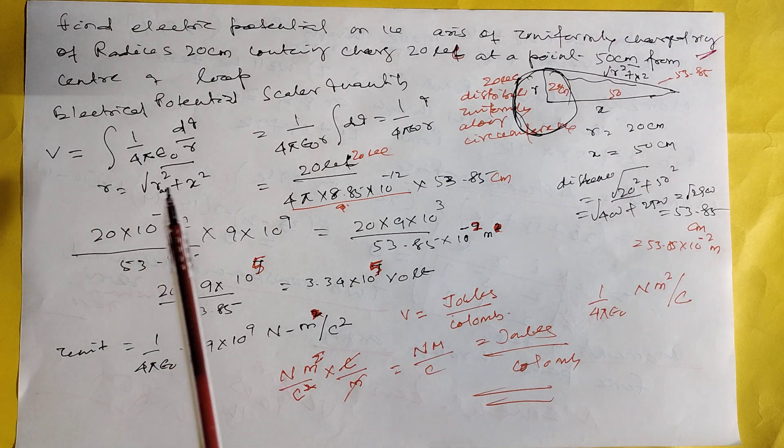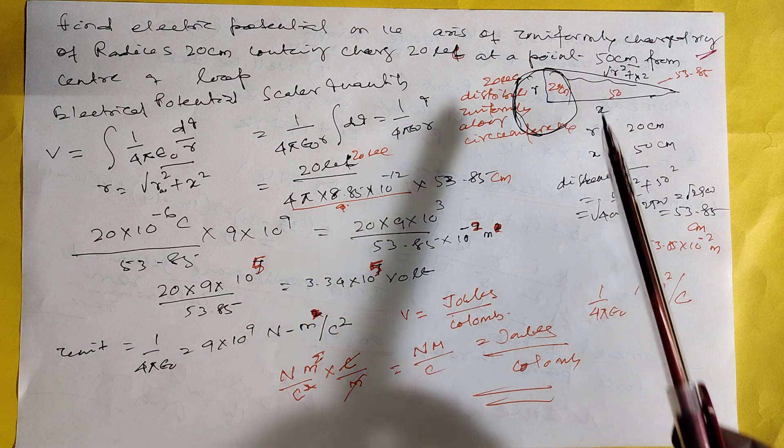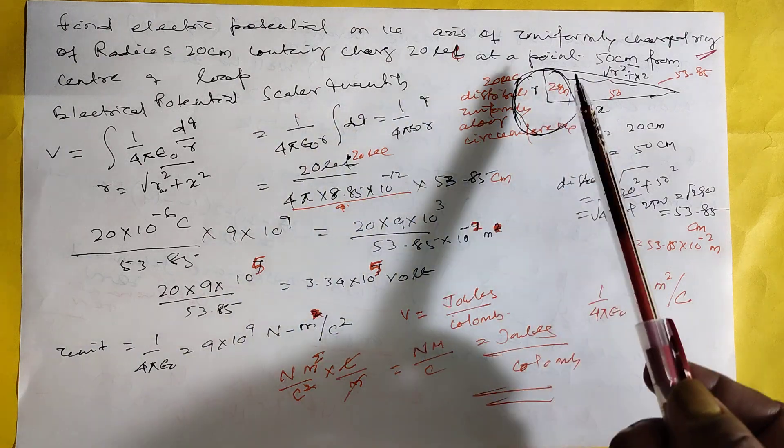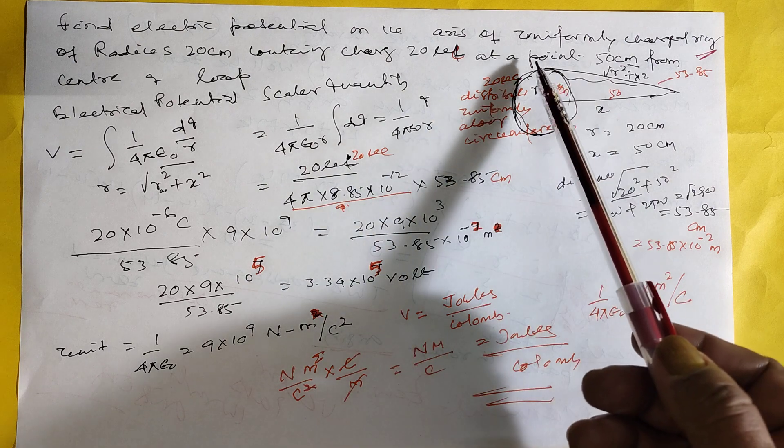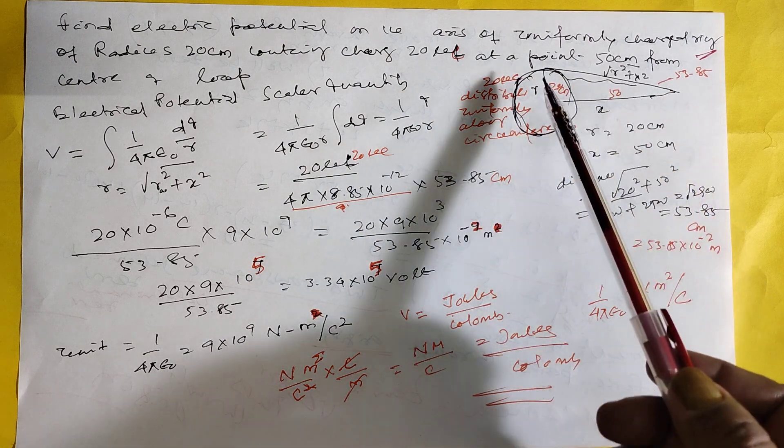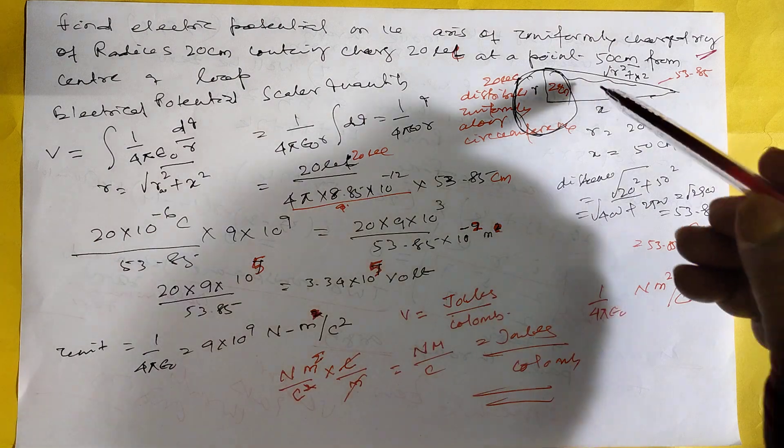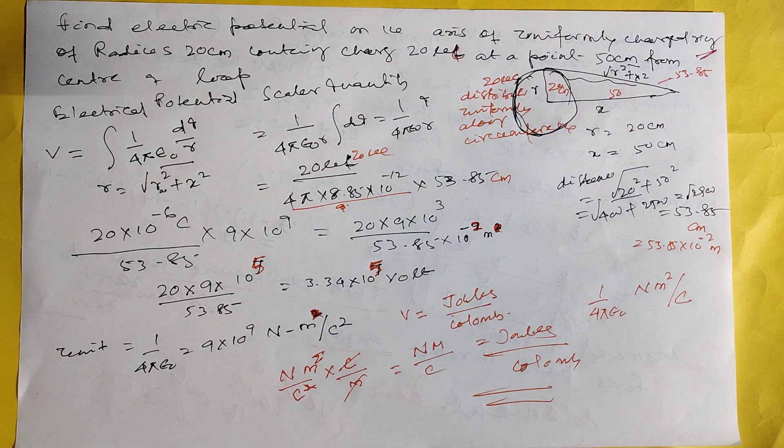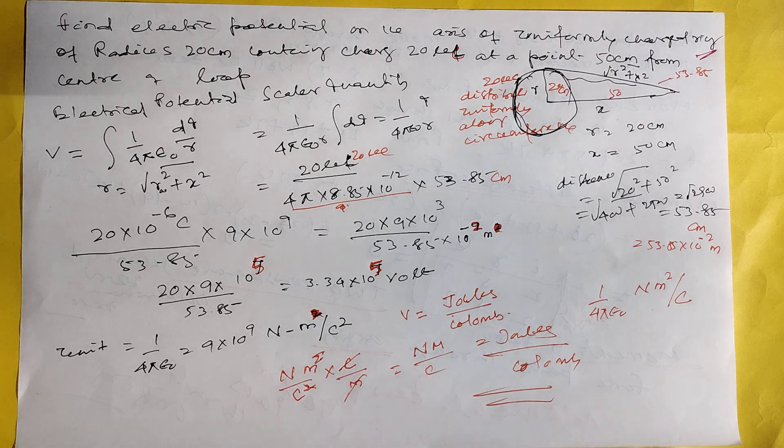This is the formula. V is equal to 1 by 4 pi epsilon 0 dq by r. This is the distance, not this r. This r is equal to this r. R square plus x square root. Here one thing you should remember: here all the dimensions are in centimeters.